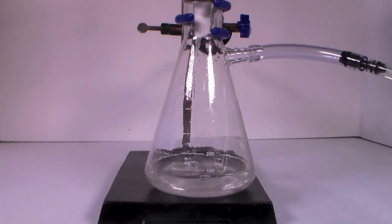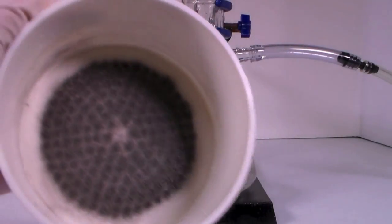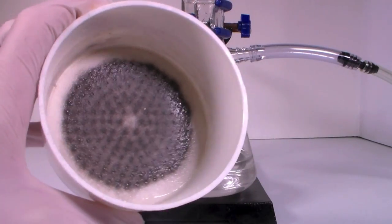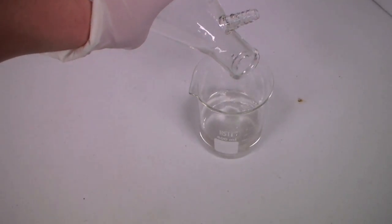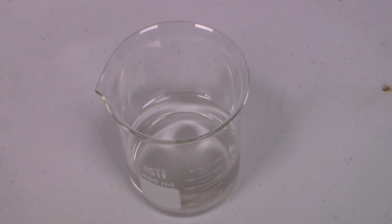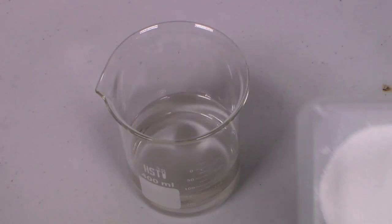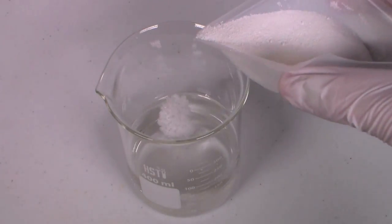After filtering, you'll be left with a nice clear solution, and all the impurities will remain in the filter paper. Now we're ready to convert this Aluminum Chloride into Aluminum Oxide. To do this, slowly add the sodium carbonate to the Aluminum Chloride solution.